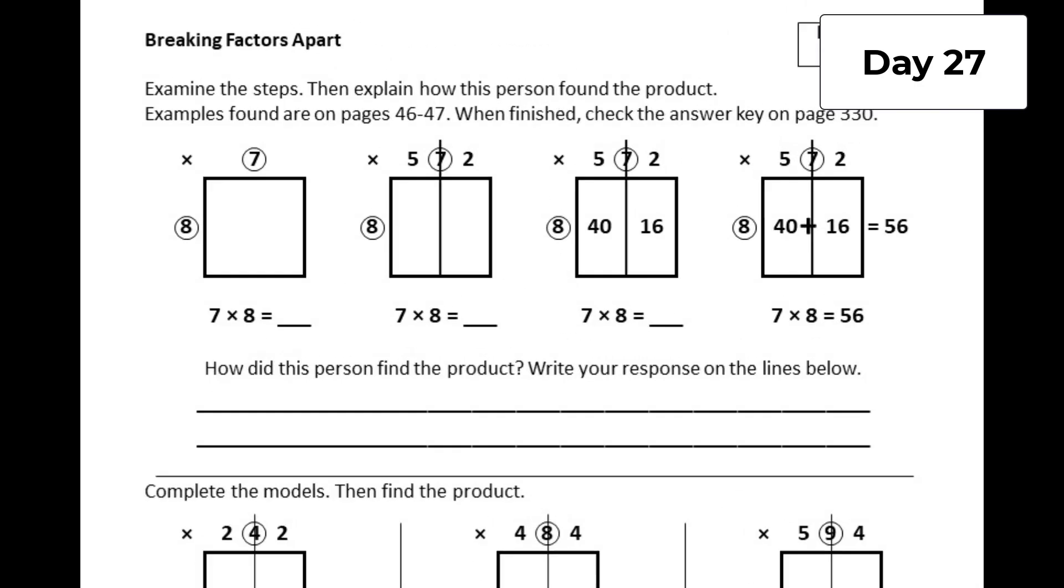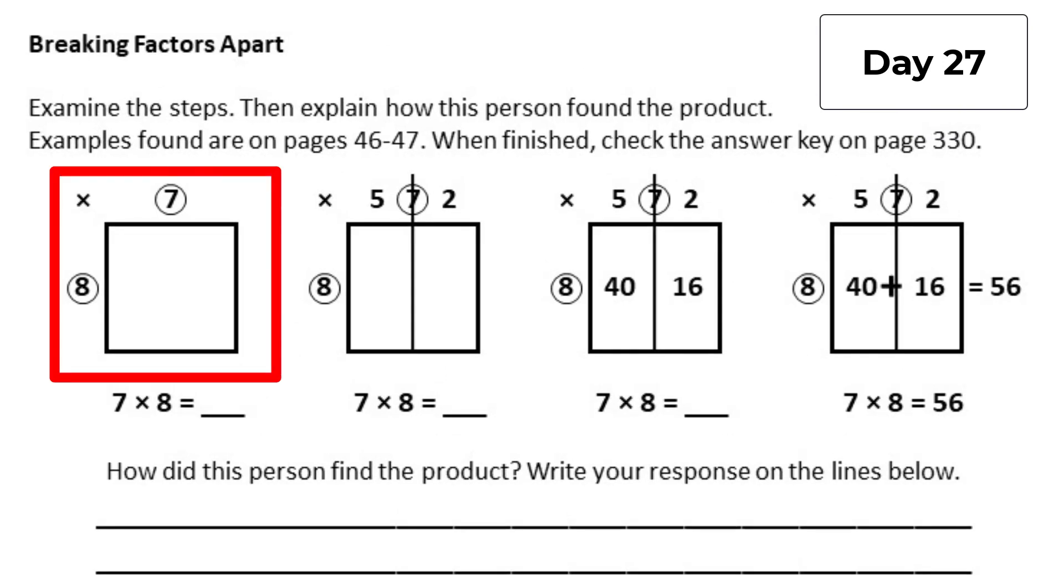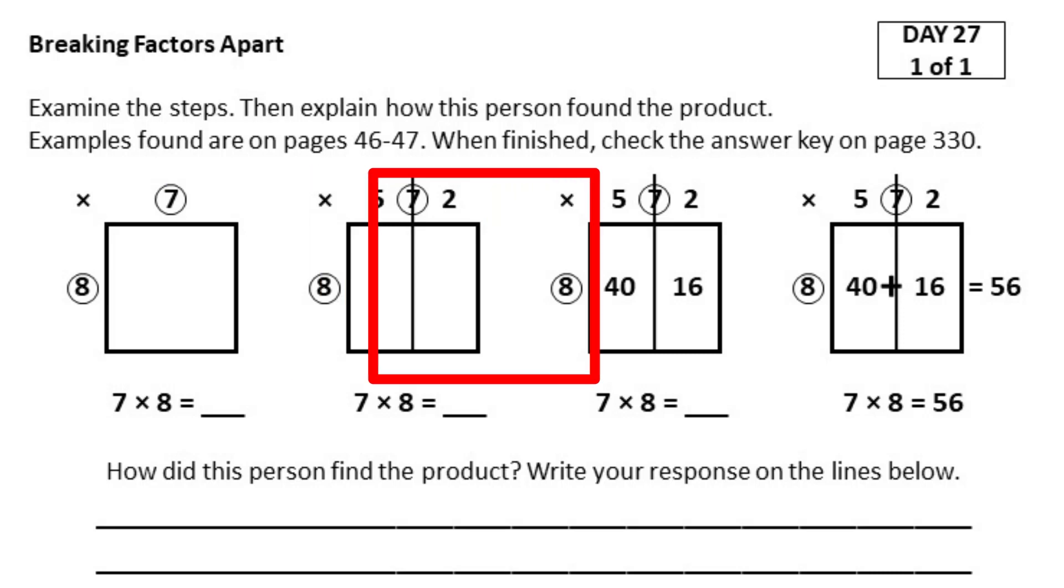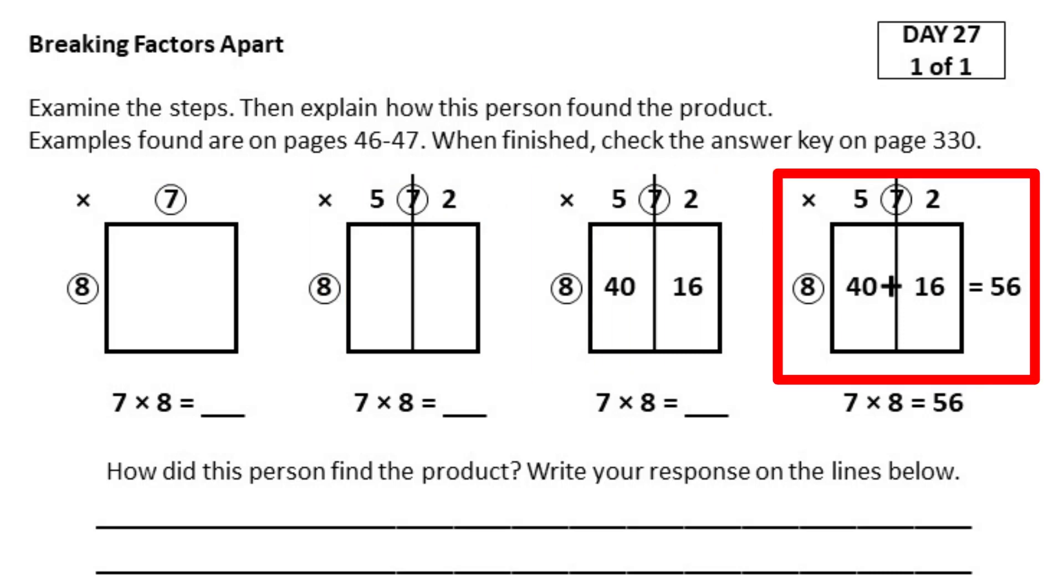The day 7 routine always begins with an example that's broken into four steps. Students can see the original problem, how a number was broken apart, the partial products, and finally the product.